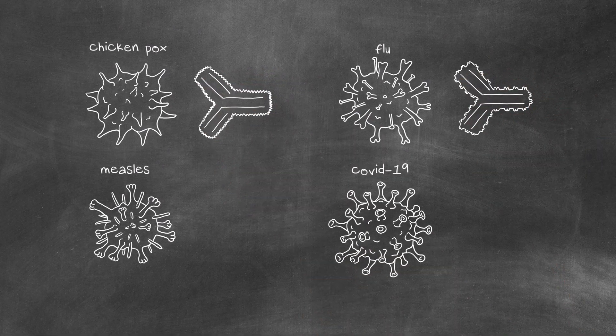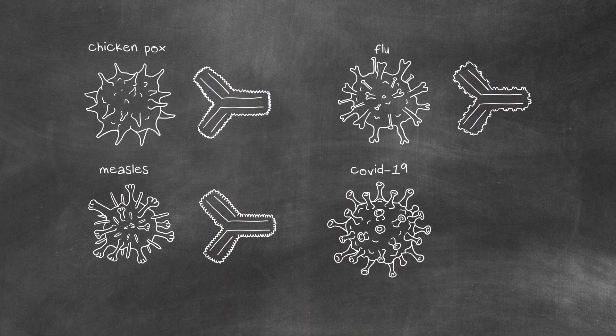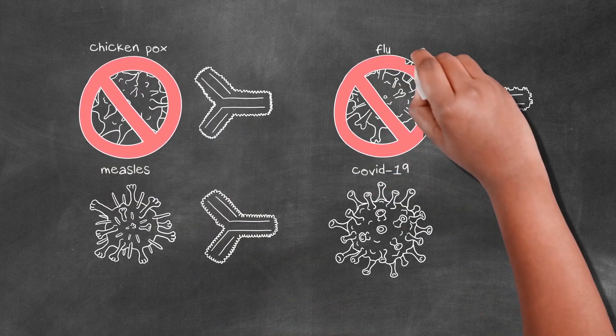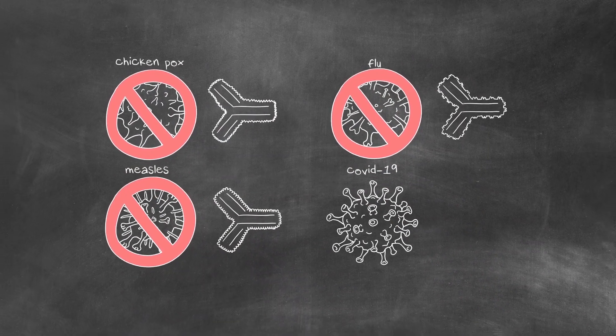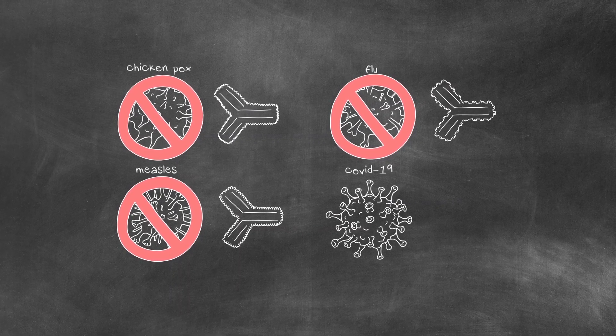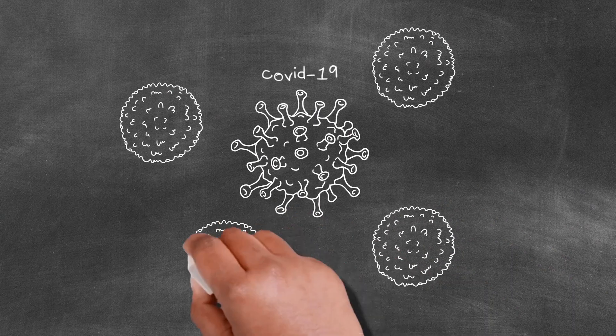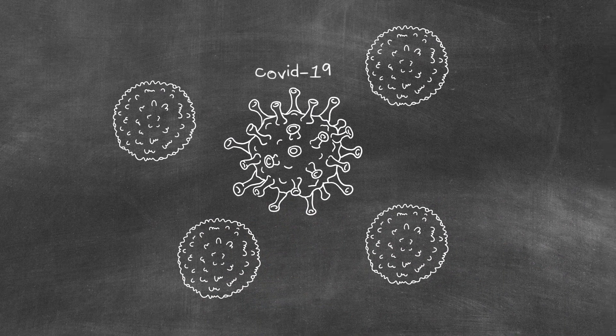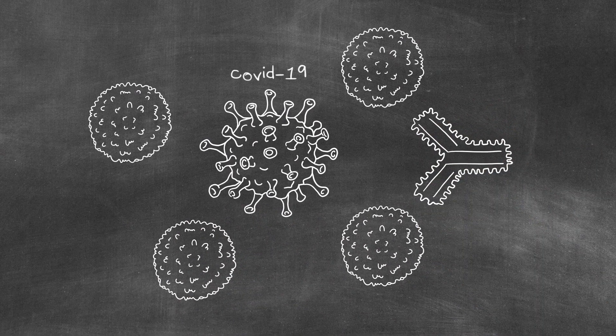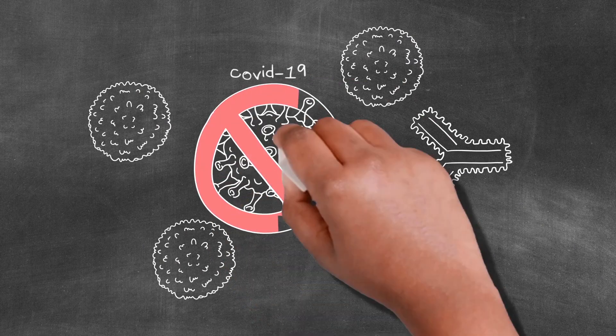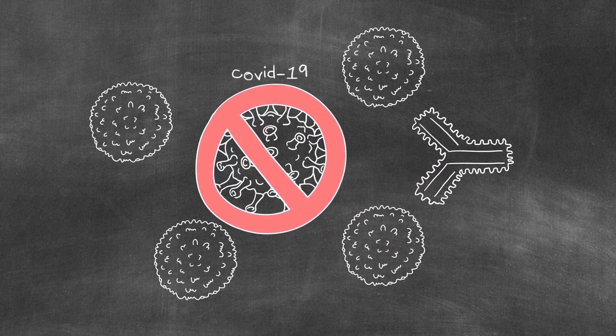Our immune system fights against these pathogens and we develop antibodies against them. A vaccine introduces weakened or inactive parts of the pathogen into your body. Your body will fight off this pathogen by developing the necessary antibodies and teaching your immune system to recognize and fight the infection in the future.